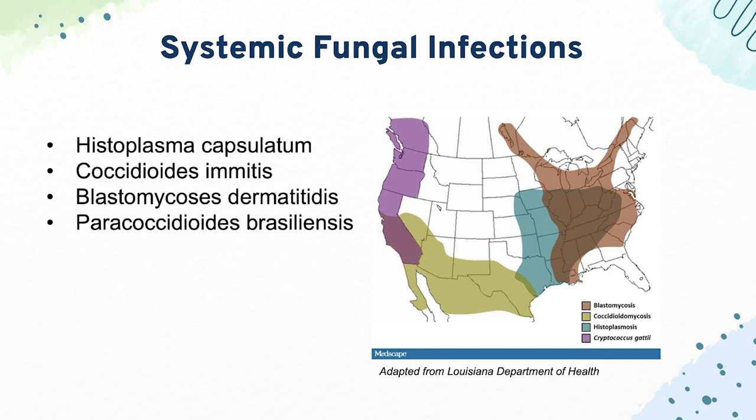For Coccidioides immitis, know that it occurs in the southwest United States. On histology, you can see spherules of endospores. It also causes erythema nodosum, arthralgias, and can disseminate to the bone and skin. Next, blastomycosis (Blastomyces dermatitidis) usually affects patients in the central U.S. or Great Lakes region — it has broad-based budding and causes lung disease and verrucous skin lesions.